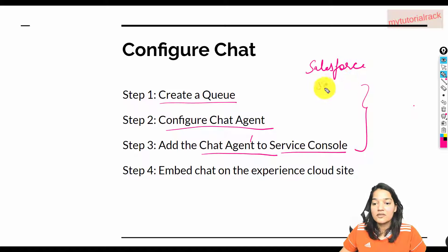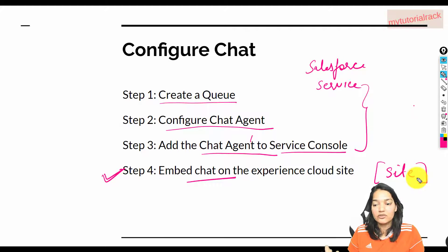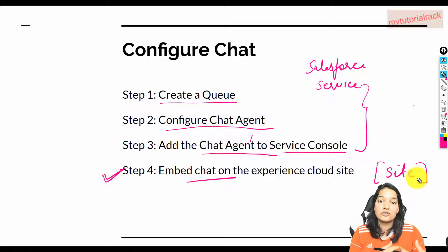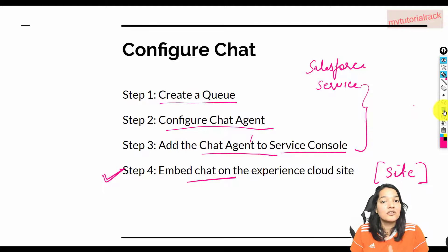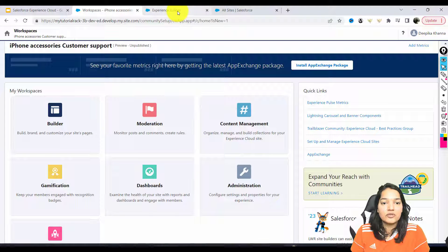Enough of the theory — let's get into the practical. Let me go back to the site. This is how our site currently looks, and by the end of this tutorial, you're going to see a chat available at the bottom corner. First thing: click on the top left-hand side and go over to Salesforce setup. Then we need to go over to the service setup.